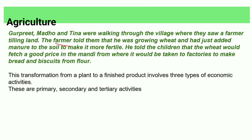The process of transformation of a plant into a final product involves three economic activities: primary, secondary, and tertiary.